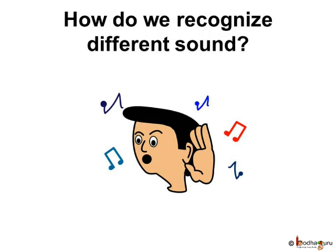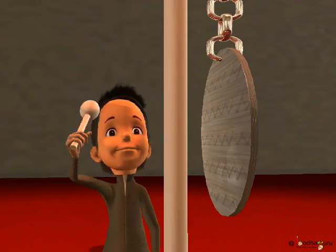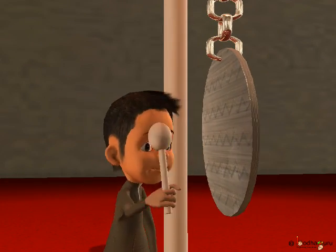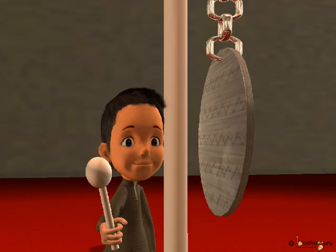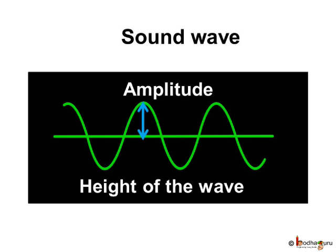So why is this difference there? These sounds must be different to enable you to recognize them. Have you ever thought what factors make them different? Let's find it out. We already know that sound is produced by vibrating bodies. The to-and-fro motion of an object is known as vibration. We also know that sound propagates in the form of a wave of vibration which moves from the source, and this vibration repeats itself after a fixed interval of time. So vibration is an oscillatory motion.